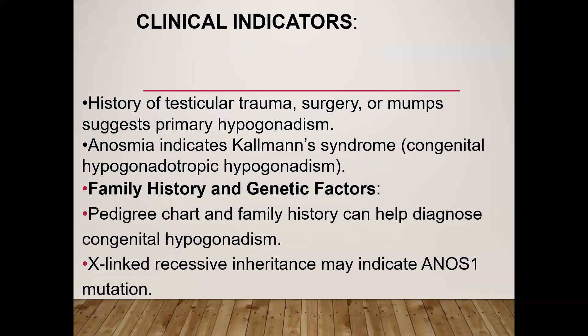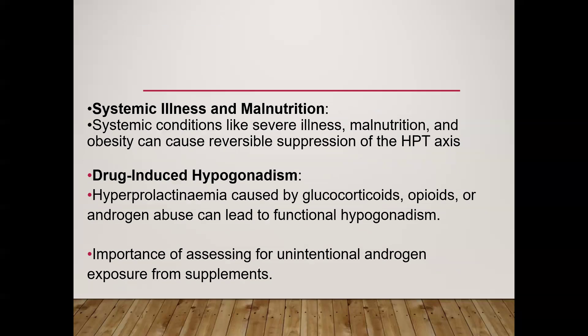Other clinical indicators: history of testicular trauma, surgery, or mumps suggests primary hypogonadism. Anosmia may suggest Kallmann syndrome, indicating congenital hypogonadotropic hypogonadism. Family history and pedigree charts help diagnose congenital hypogonadism; X-linked recessive inheritance may indicate an ANOS1 mutation. Systemic illnesses, malnutrition, and obesity can cause reversible suppression of the hypothalamic-pituitary axis. Drug-induced hypogonadism can be caused by medications raising prolactin, glucocorticoids, opioids, and androgen abuse — increasingly common in clinical practice.